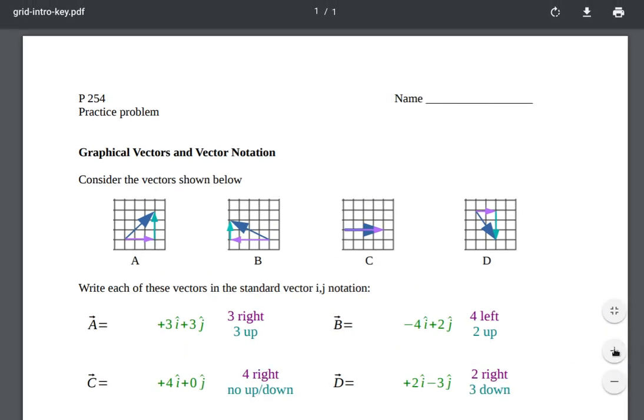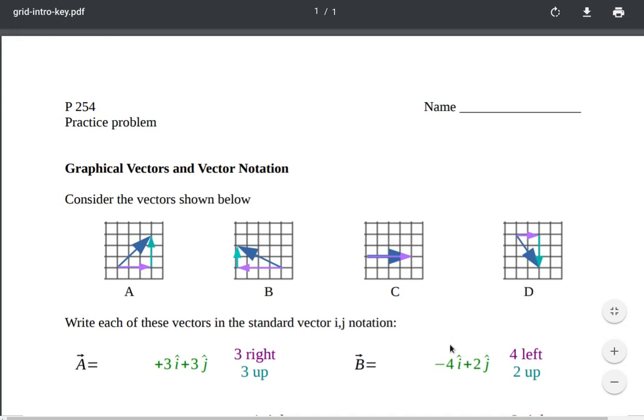And I'm going to go ahead and make this a little bit bigger so it's easier to see on the video. So we have these grids and we have our vectors as arrows on these. This is how you graphically show a vector. And then we talked about how you would represent that in the i,j notation.